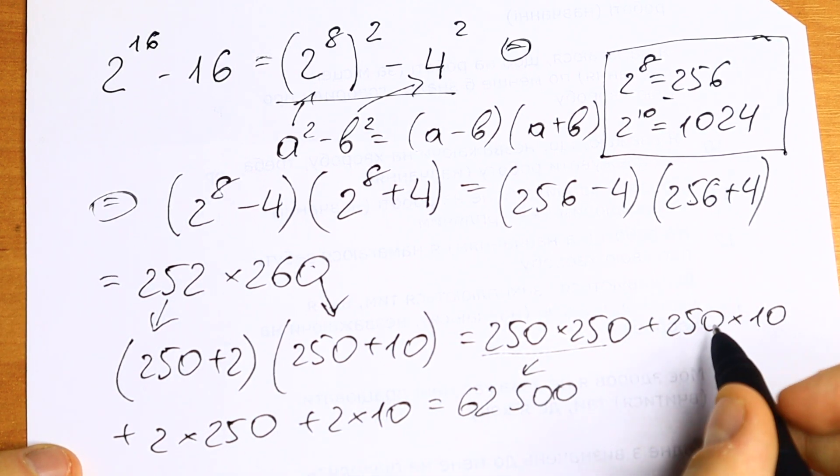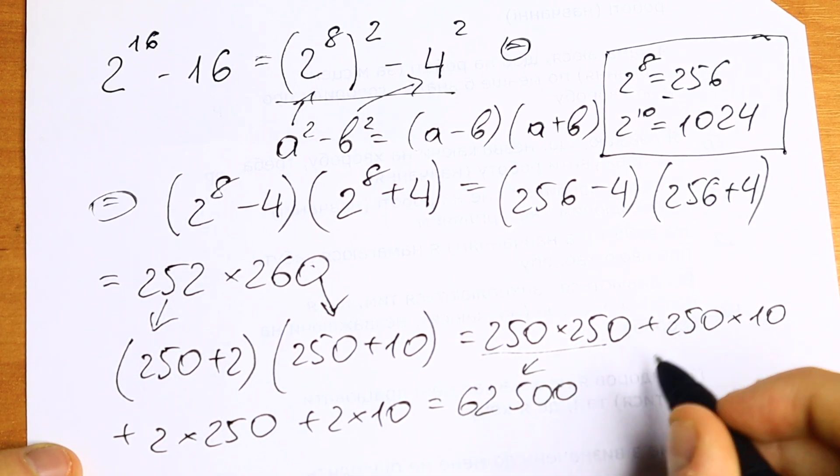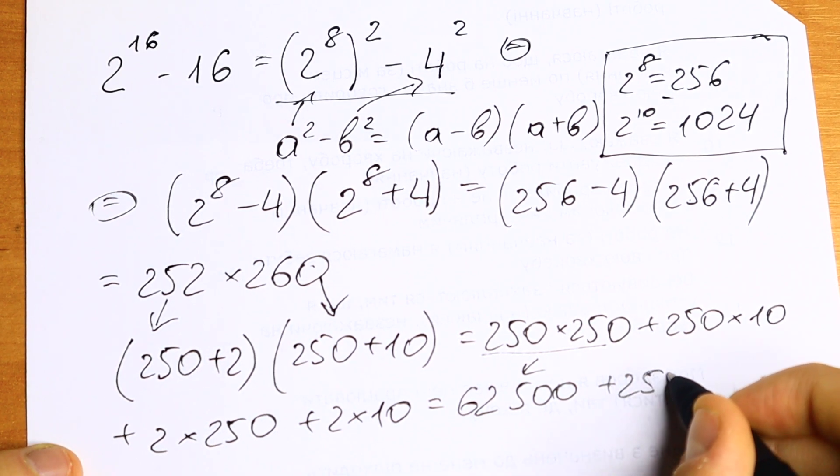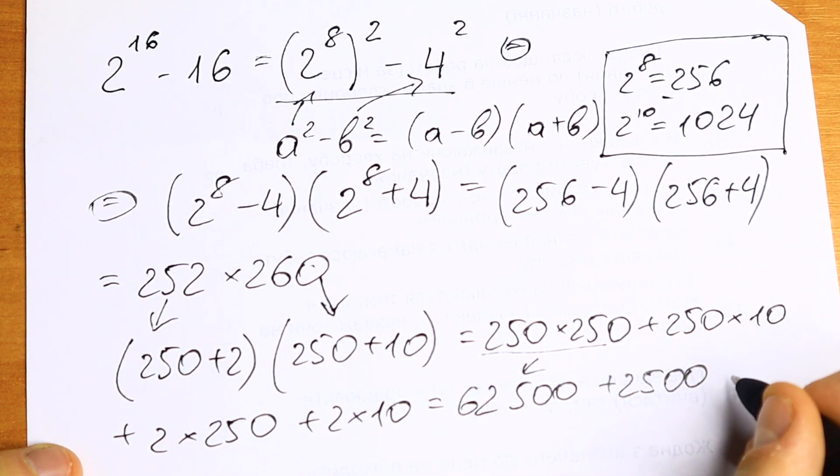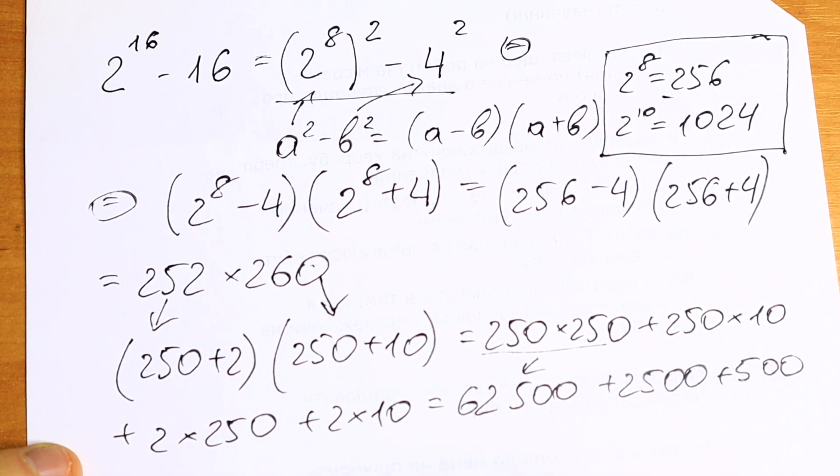Right here we will have 250 times 10, plus 2500, plus right here we will have 500, and the last step plus 20 because 2 times 10.